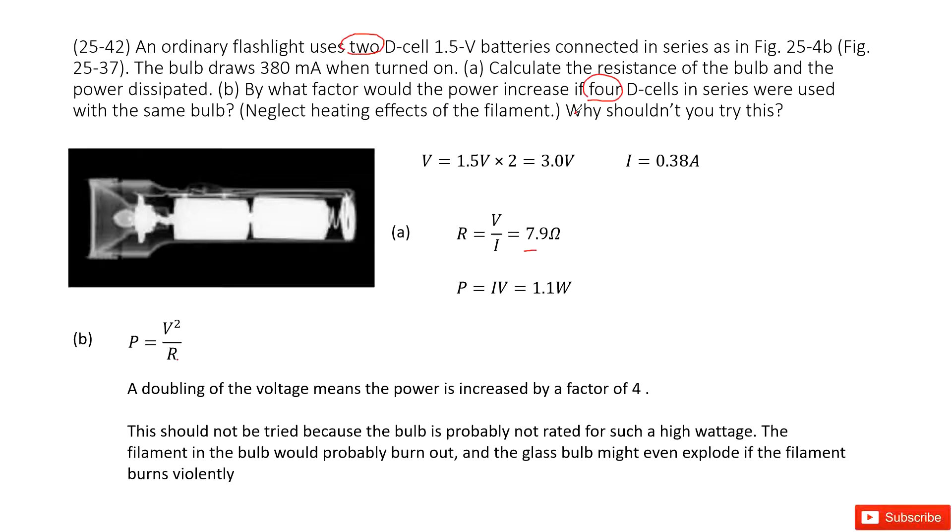As we talk about, the resistance for this light bulb is a constant. If the voltage becomes twice, very straightforward, the current will become twice. And then this may make the light bulb burn out.